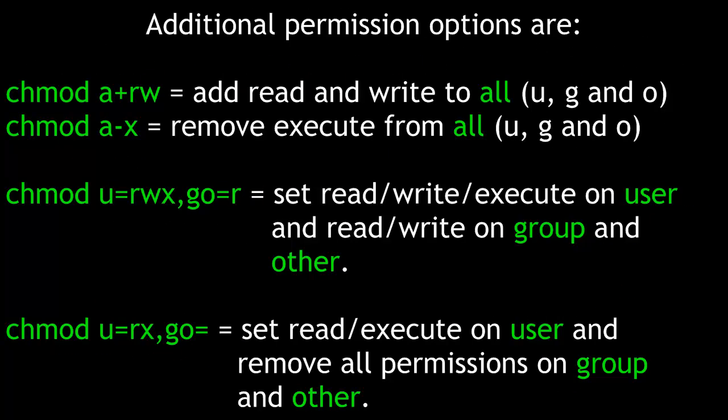Additional permission options include chmod a+rw, which adds read and write to all — the combination of user, group, and other. Another example is chmod a-x, which removes execute from all — again, the combination of user, group, and other.